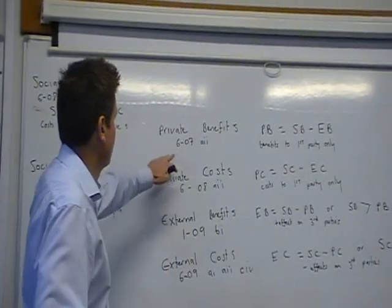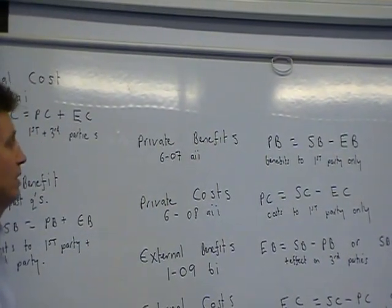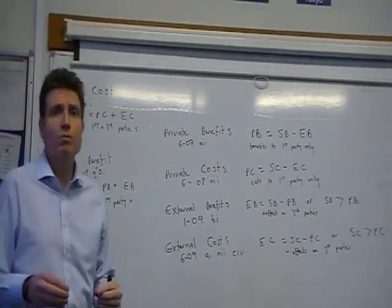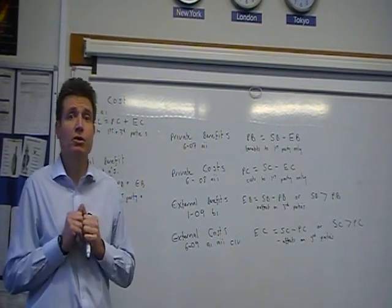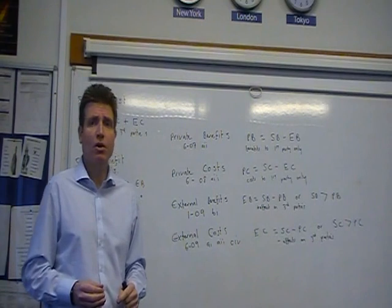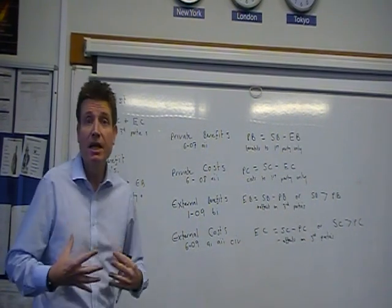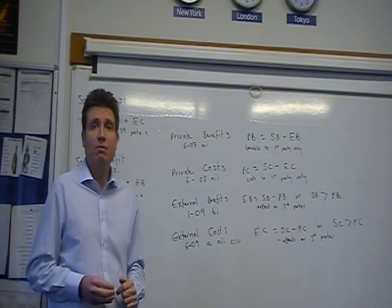So why don't we start with private benefits? As you can see, there was a question on it in June 2007. Basically, private benefits are benefits accrued by the first person. And when we say first person, it just means the individual concerned. So for instance, the benefits of me consuming education might be that I get a higher salary. So that's a typical example of a private benefit.